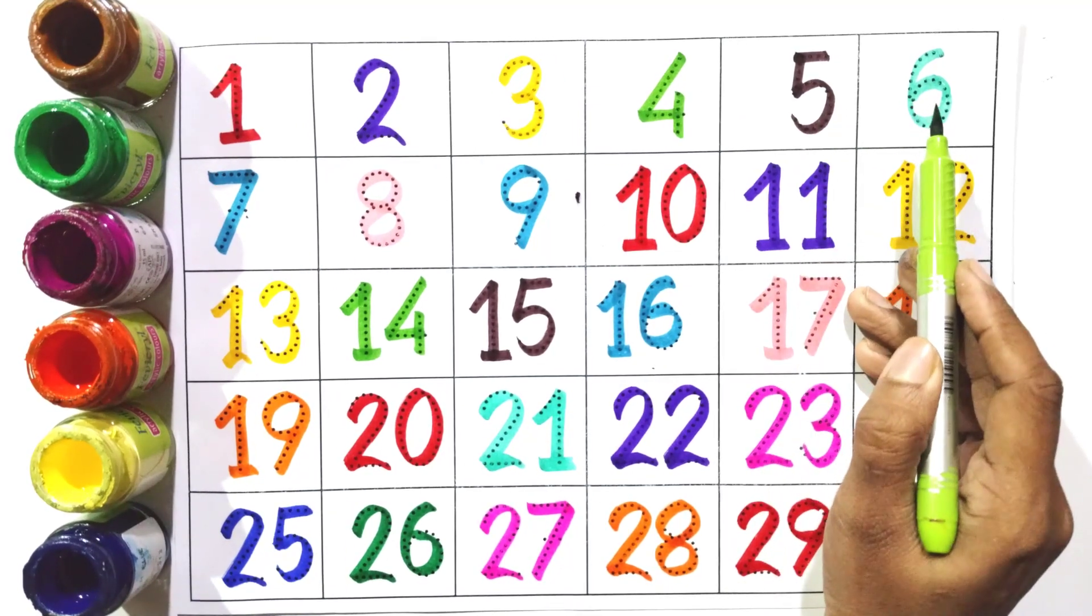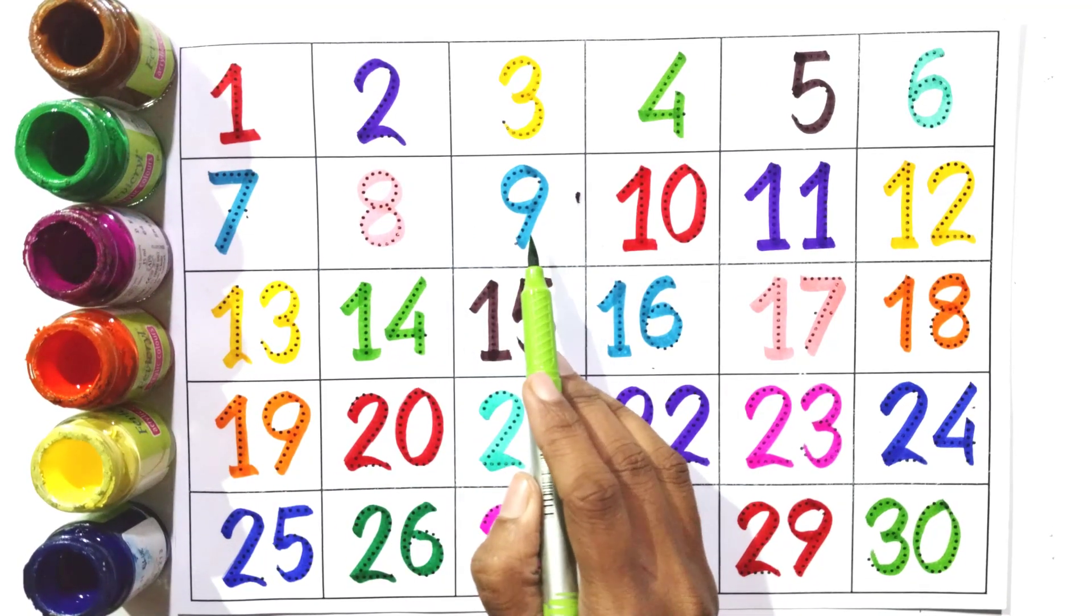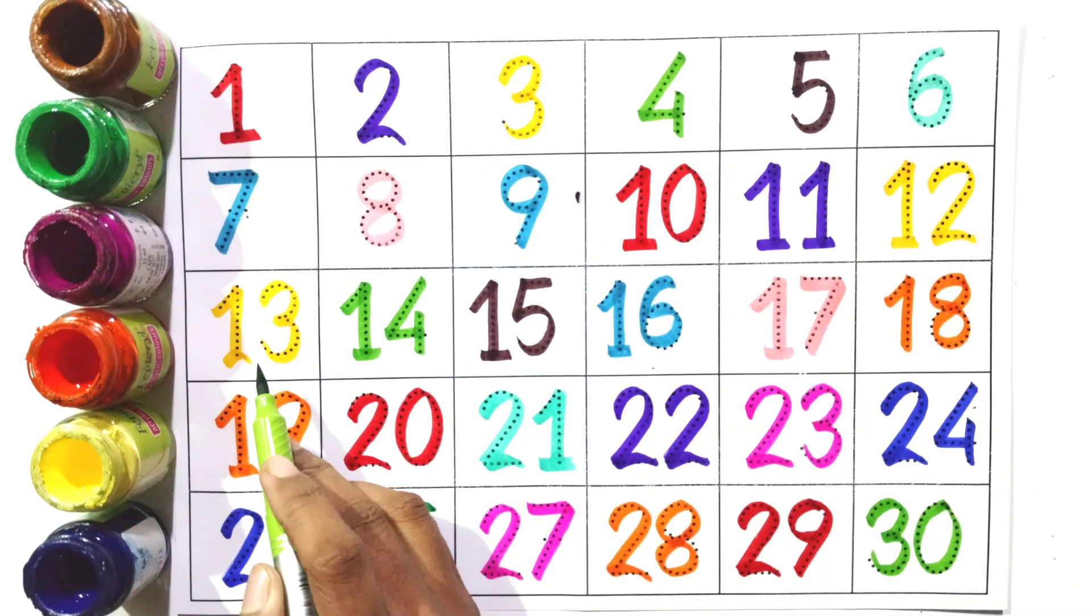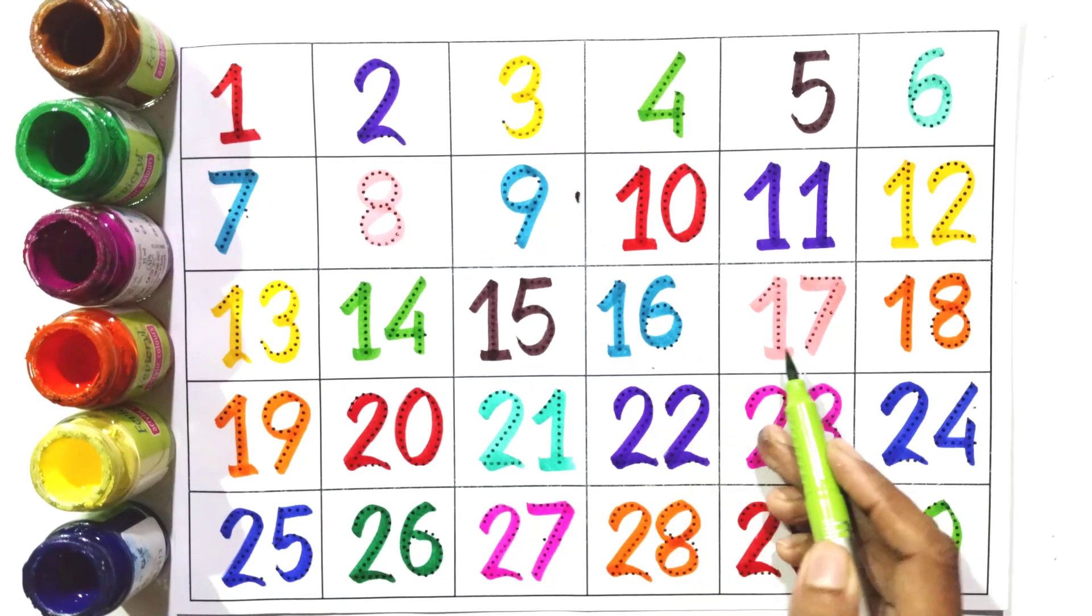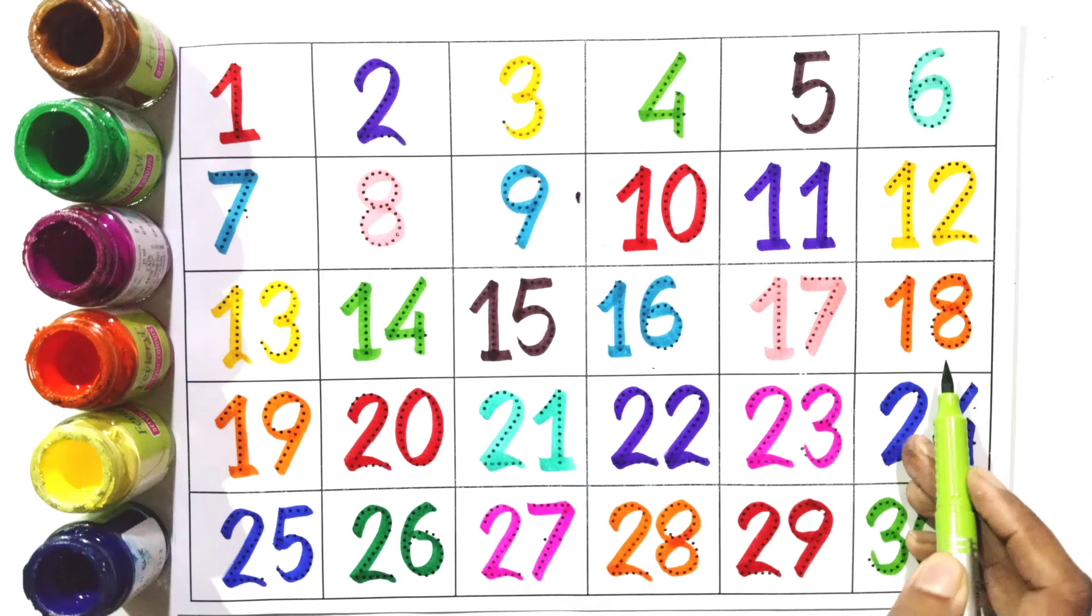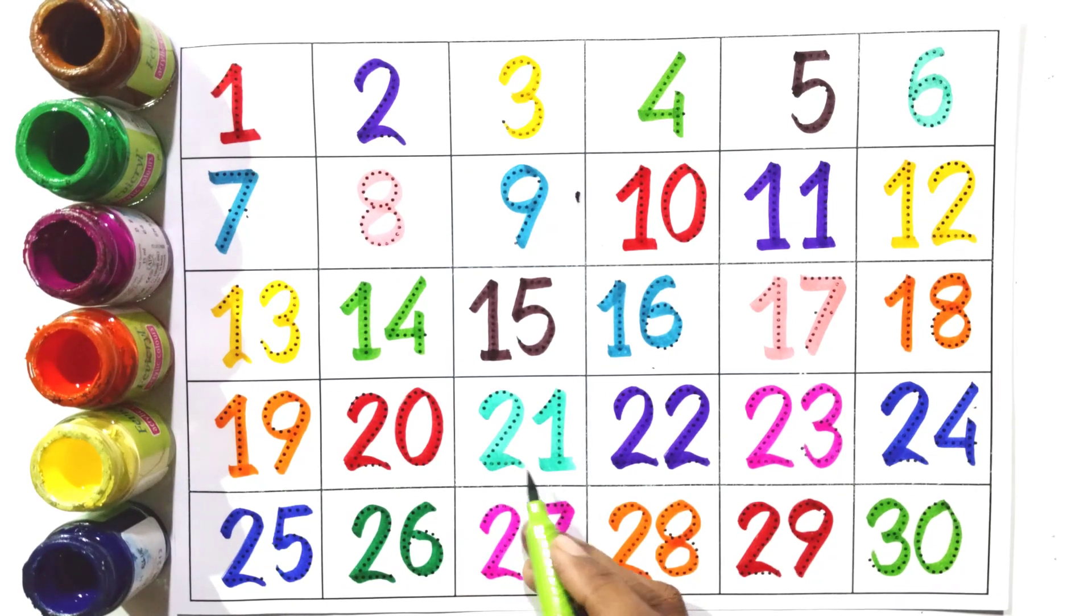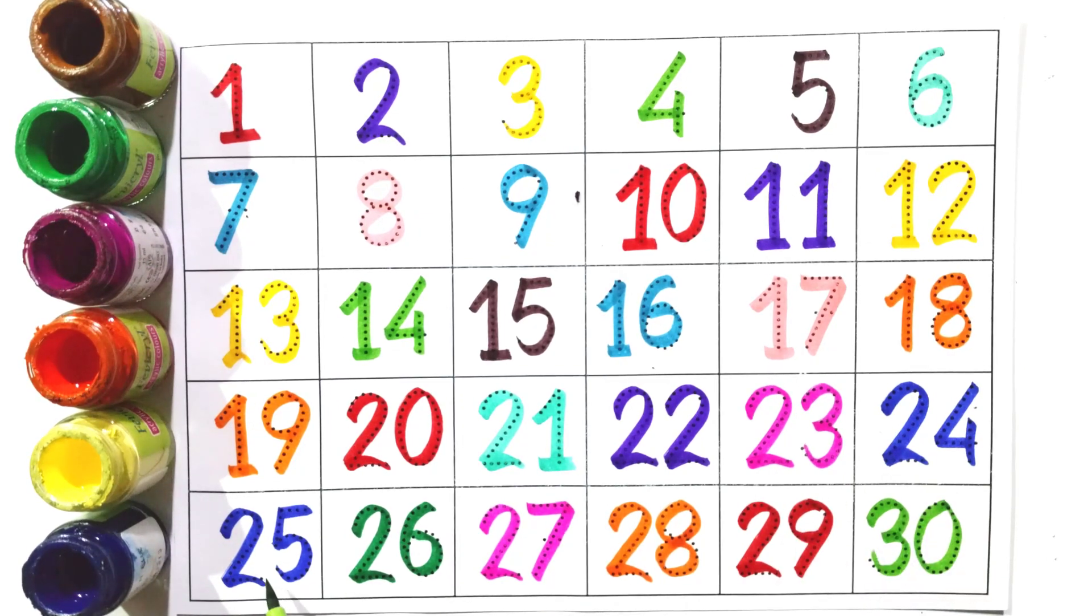Five, six, eight, nine, ten, eleven, twelve, thirteen, fourteen, fifteen, sixteen, seventeen, eighteen, nineteen, twenty, twenty-one, twenty-two, twenty-three, twenty-four, twenty-five, twenty-six, twenty-seven, twenty-eight, twenty-nine, thirty.